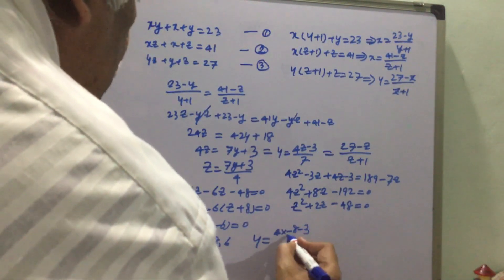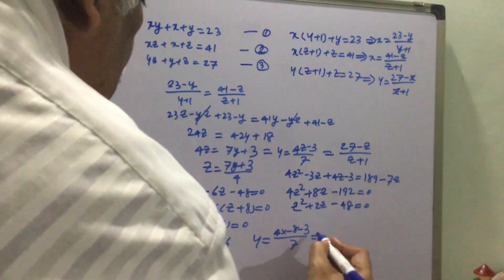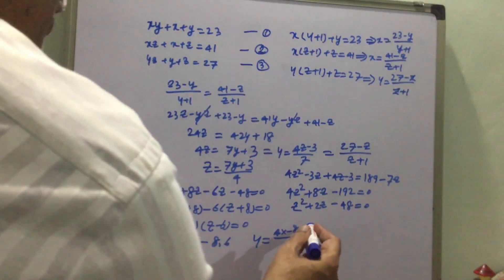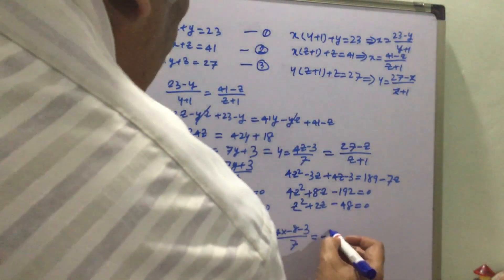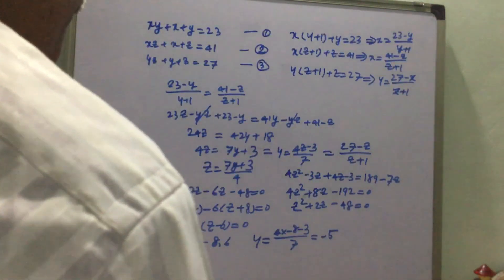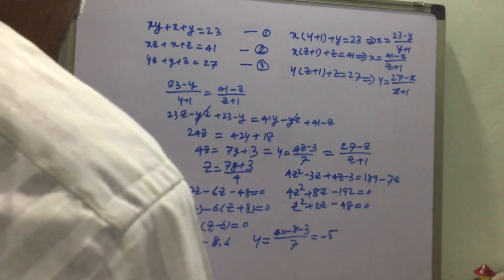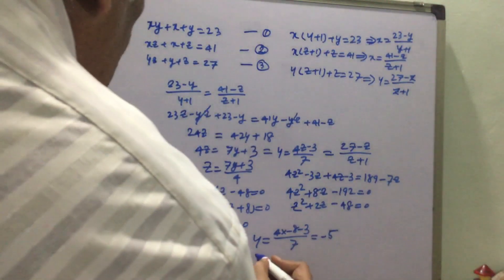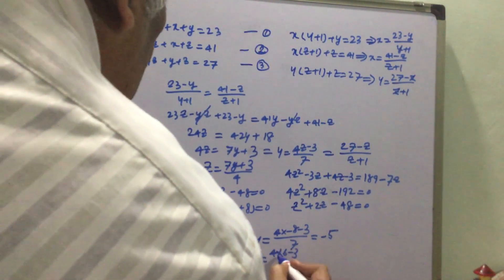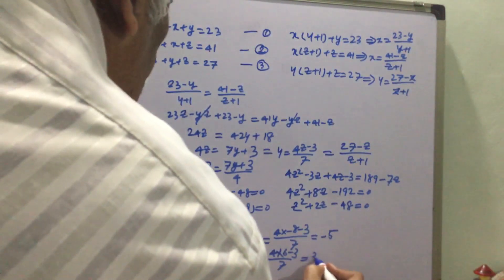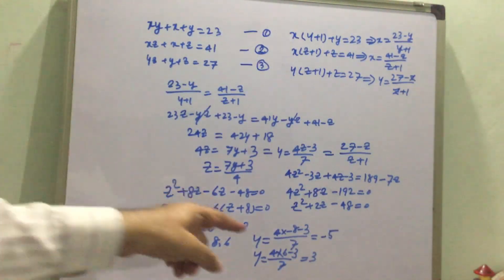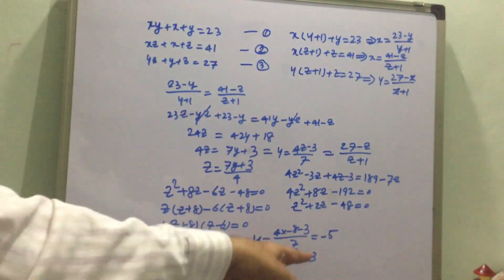For z = -8: y = (4×(-8) - 3) / 7 = (-32 - 3) / 7 = -35 / 7 = -5. For z = 6: y = (4×6 - 3) / 7 = (24 - 3) / 7 = 21 / 7 = 3.